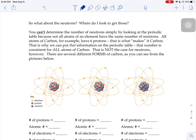Well, you can't determine the number of neutrons simply by looking at the periodic table, because not all atoms of an element have the same number of neutrons. All atoms of carbon, for example, have six protons. That's what makes it carbon. That's carbon's fingerprint, is to have six protons in its nucleus. So that's why we can put that information on the periodic table, because it's consistent. Every single carbon atom in the world has six protons in it, but that's not the case for neutrons. The neutron number can vary. There's a few different forms of carbon, as you can see in these pictures below.